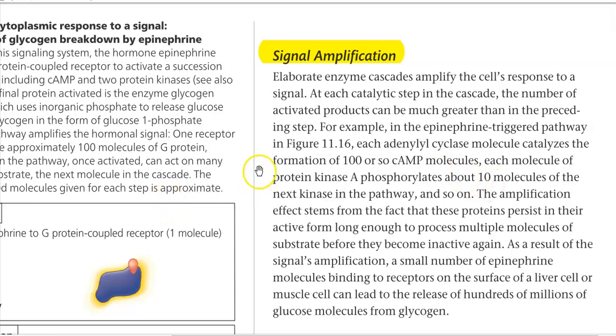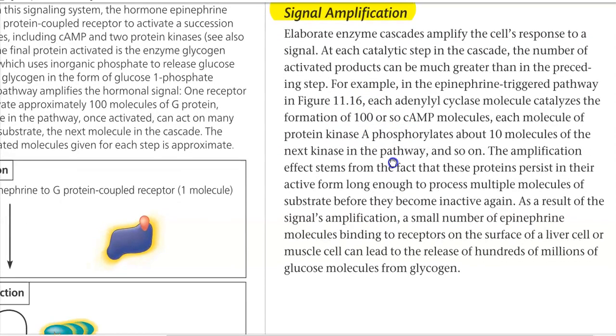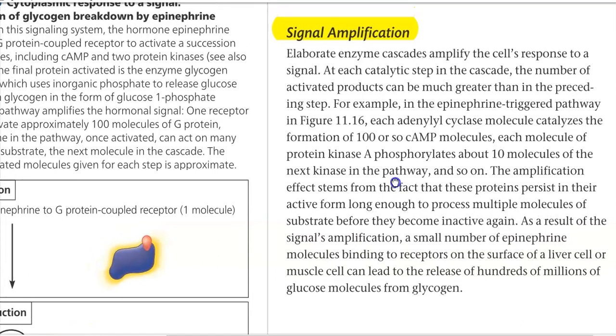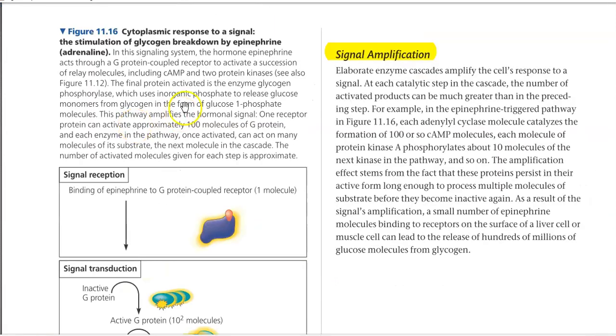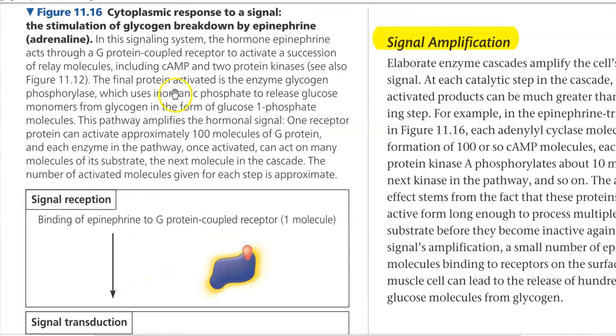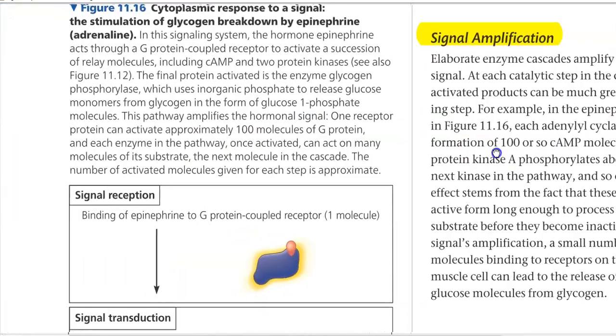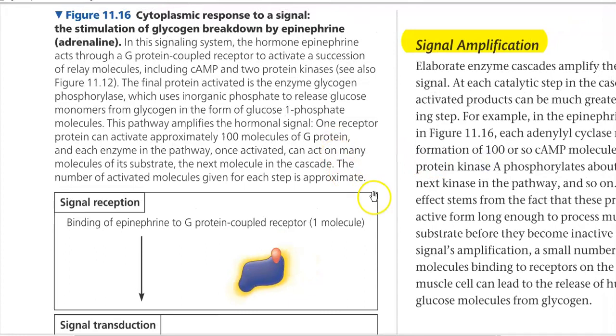That is, compared to the preceding step, in the subsequent step, there will be a greater number of activated products to be formed. For example, we are going to look at how epinephrine is triggering the breakdown of glycogen. So, for that, we can look at the example here in the left hand side.